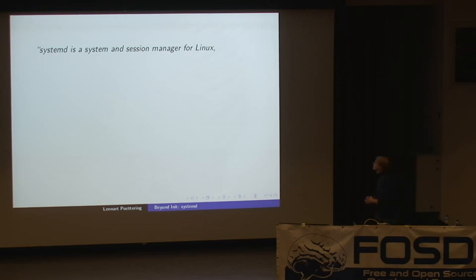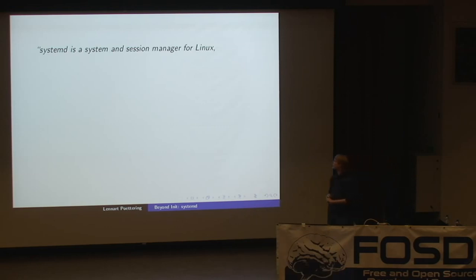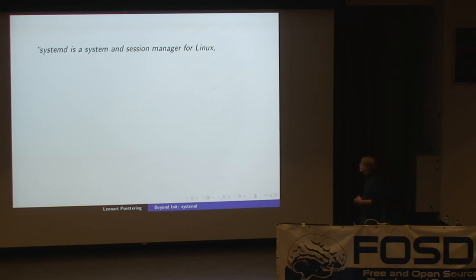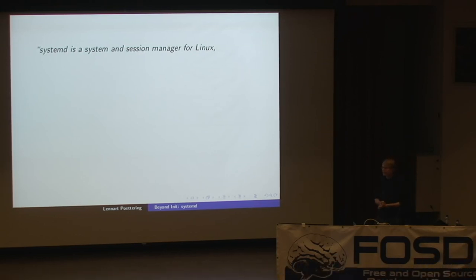The first half sentence reads: System D is a system and session manager for Linux. A system manager — probably everybody has an idea — is like this operating system thing. What we mean by that is that it's an init system, that it manages the system and the components of the system, controlling what processes are being run. A session manager, on the other hand, is probably known to many people — Gnome session is a session manager, KDE session is a session manager. System D also manages the session, so it's a replacement in some ways, or it can be used to augment Gnome session or KDE session for Linux.